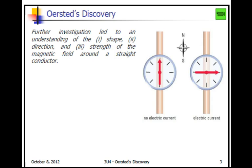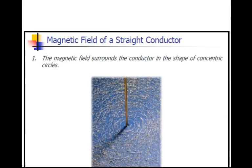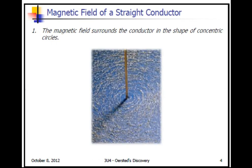Let's look at what happens when we have a conductor, an electrical conductor going through a piece of paper, and we have iron filings on that paper. The iron filings orient themselves in the direction of the magnetic field, and the magnetic field appears to be concentric circles around the conductor.